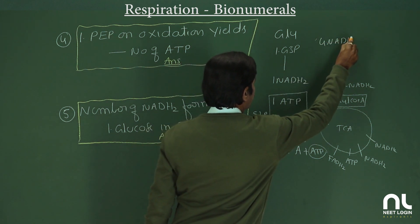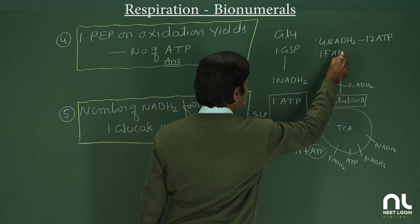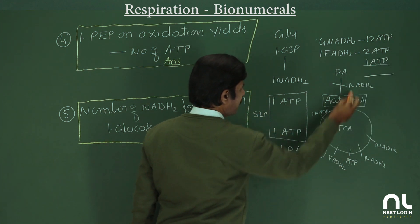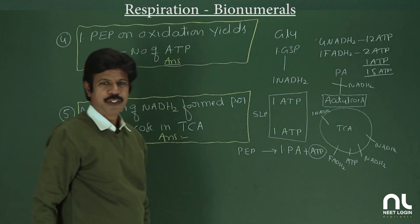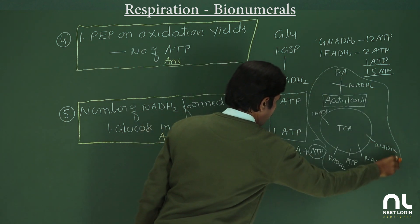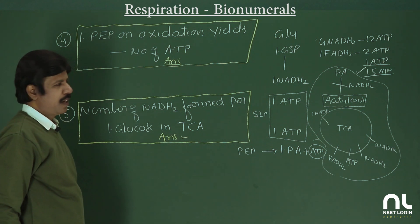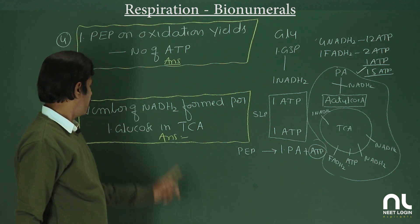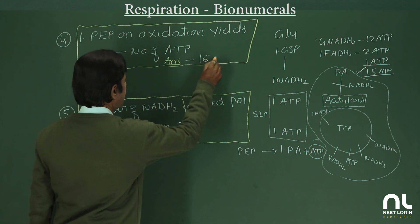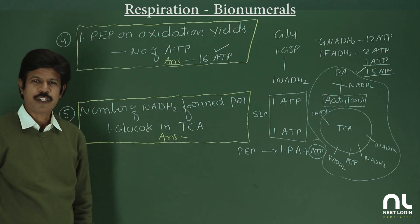The 4 NADH yield 12 ATP; 1 FADH2 yields 2 ATP; and 1 ATP comes from substrate level phosphorylation in TCA — giving 15 ATP from mitochondria. Adding the 1 ATP produced from 1 PEP in glycolysis: 15 + 1 = 16 ATP total for oxidation of 1 phosphoenolpyruvic acid.